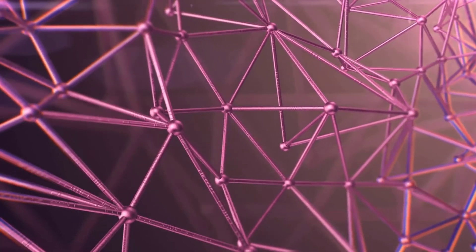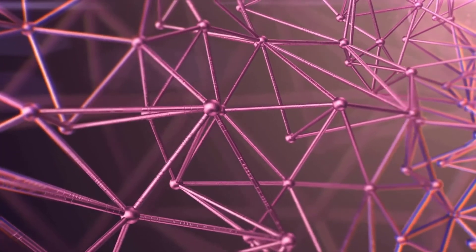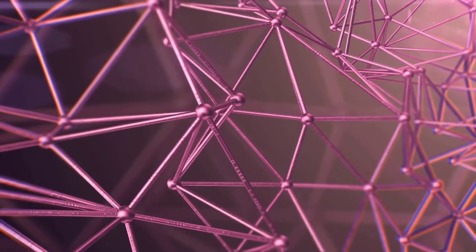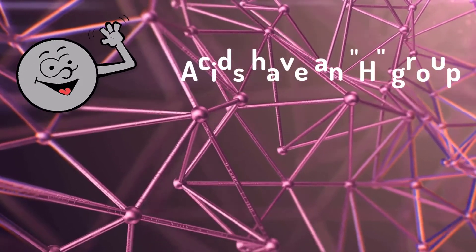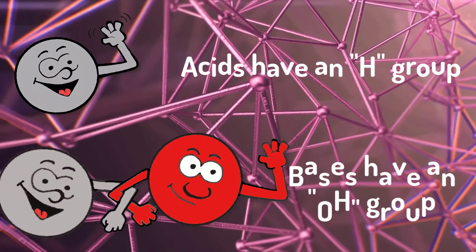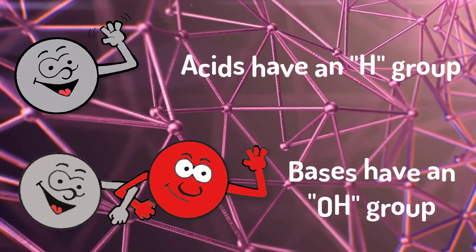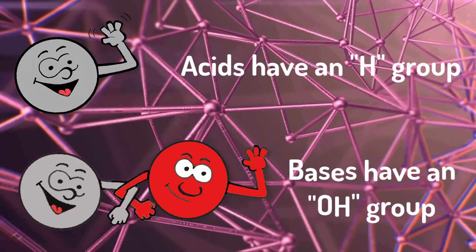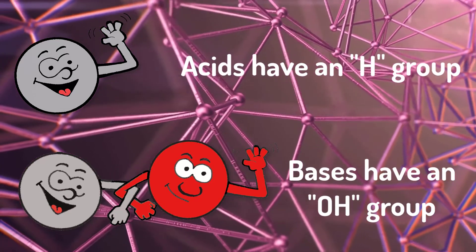Acids and bases are different. Acids and bases have different atoms in their molecules. Acids have an H group. Bases have an OH group. H groups and OH groups give acids and bases different properties.